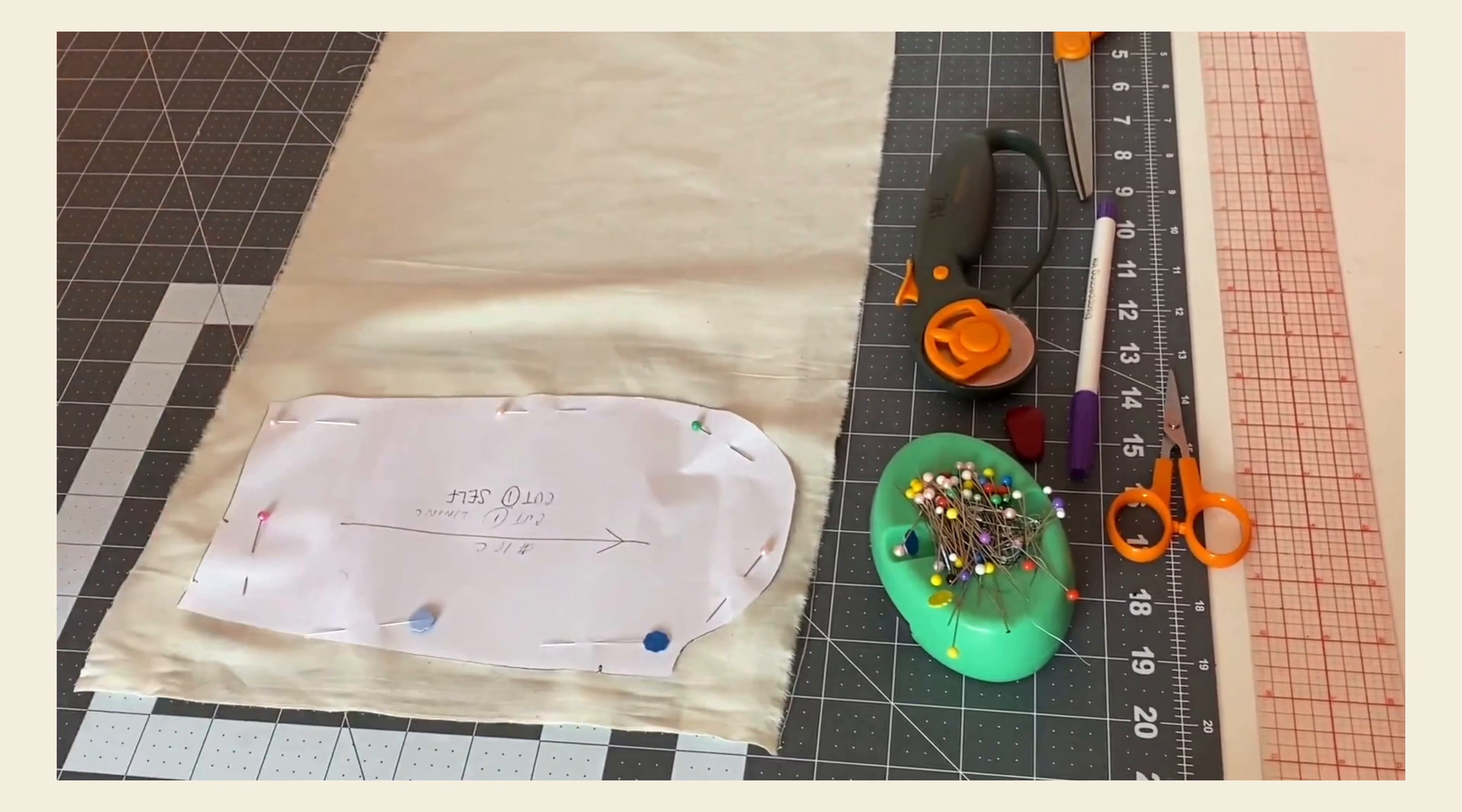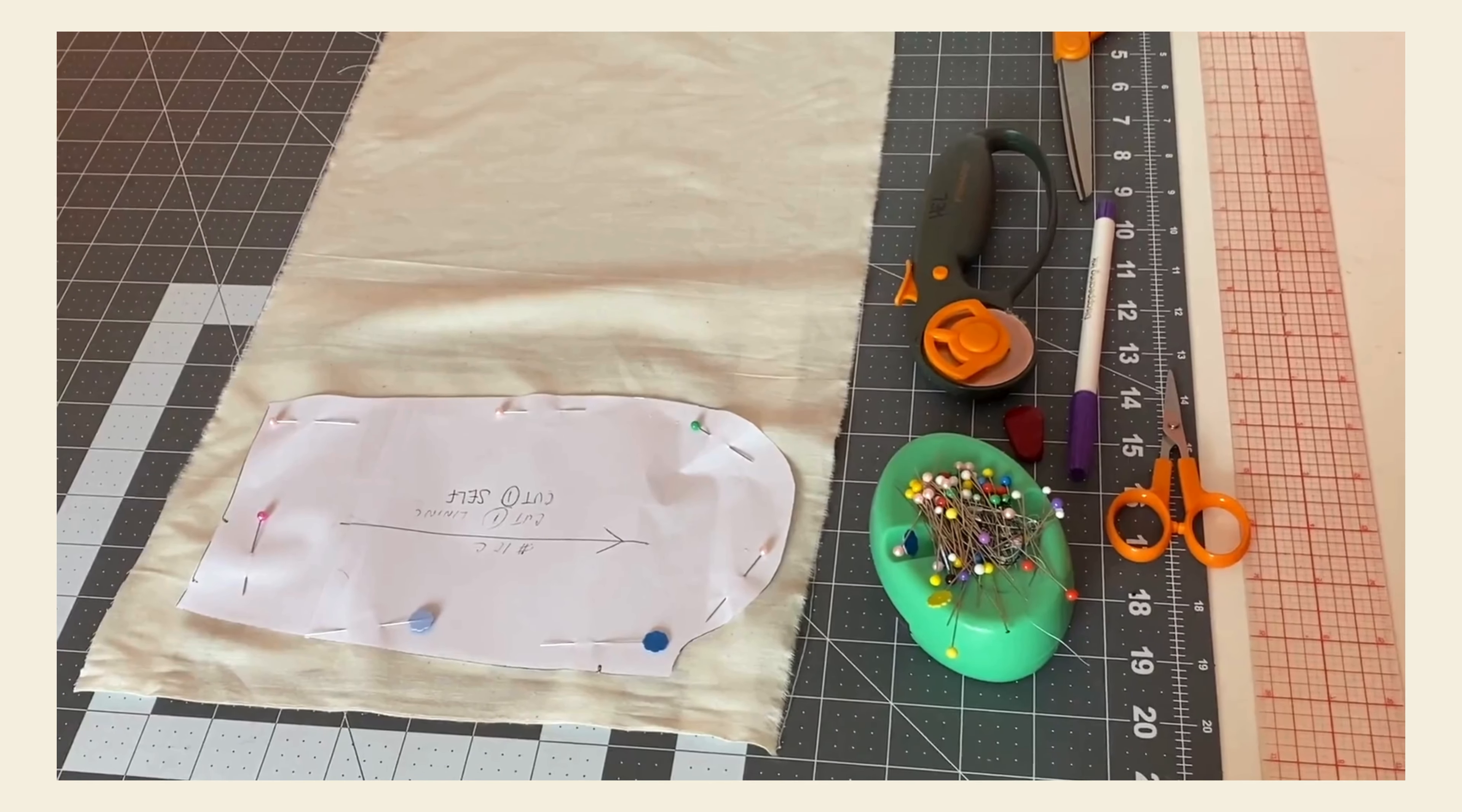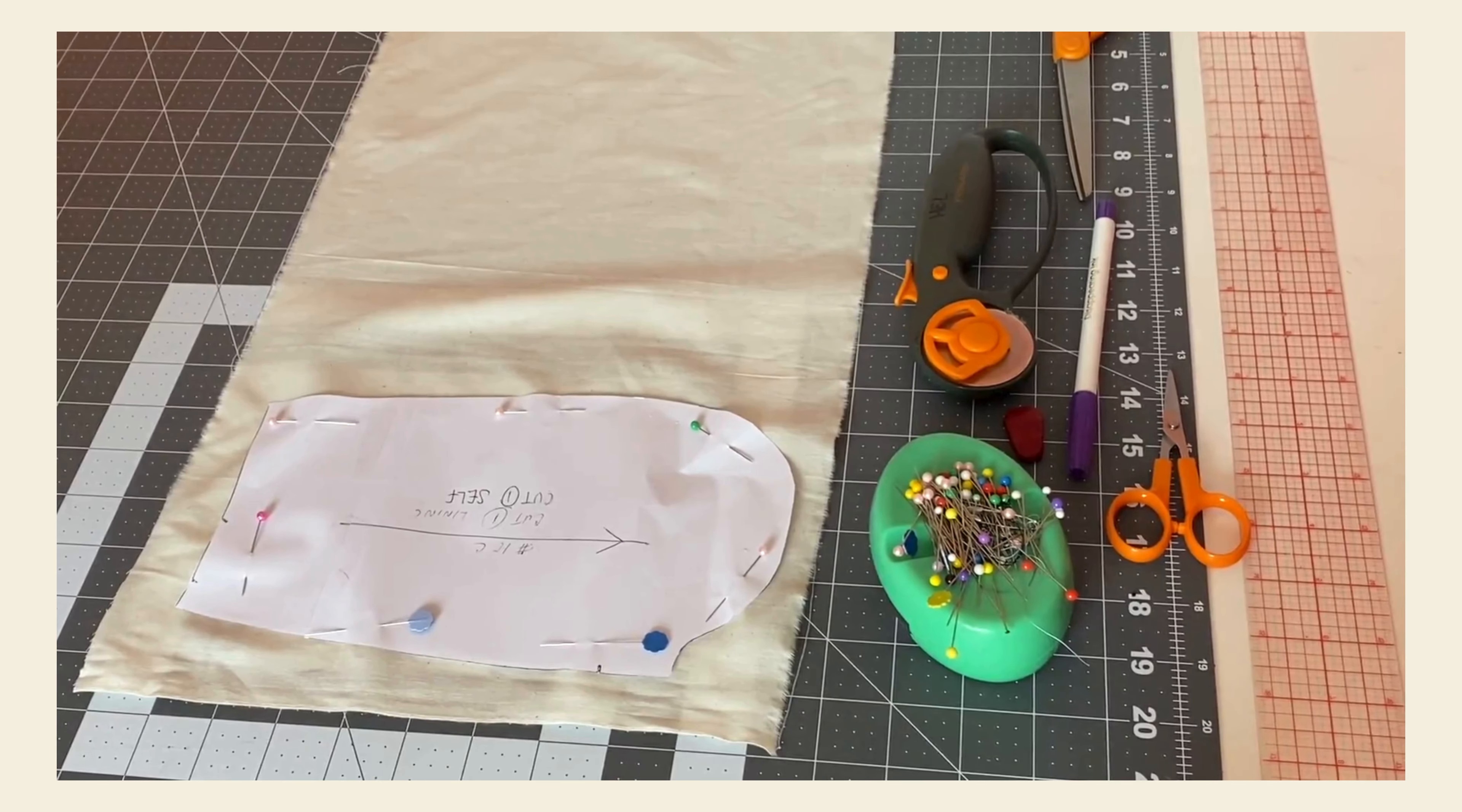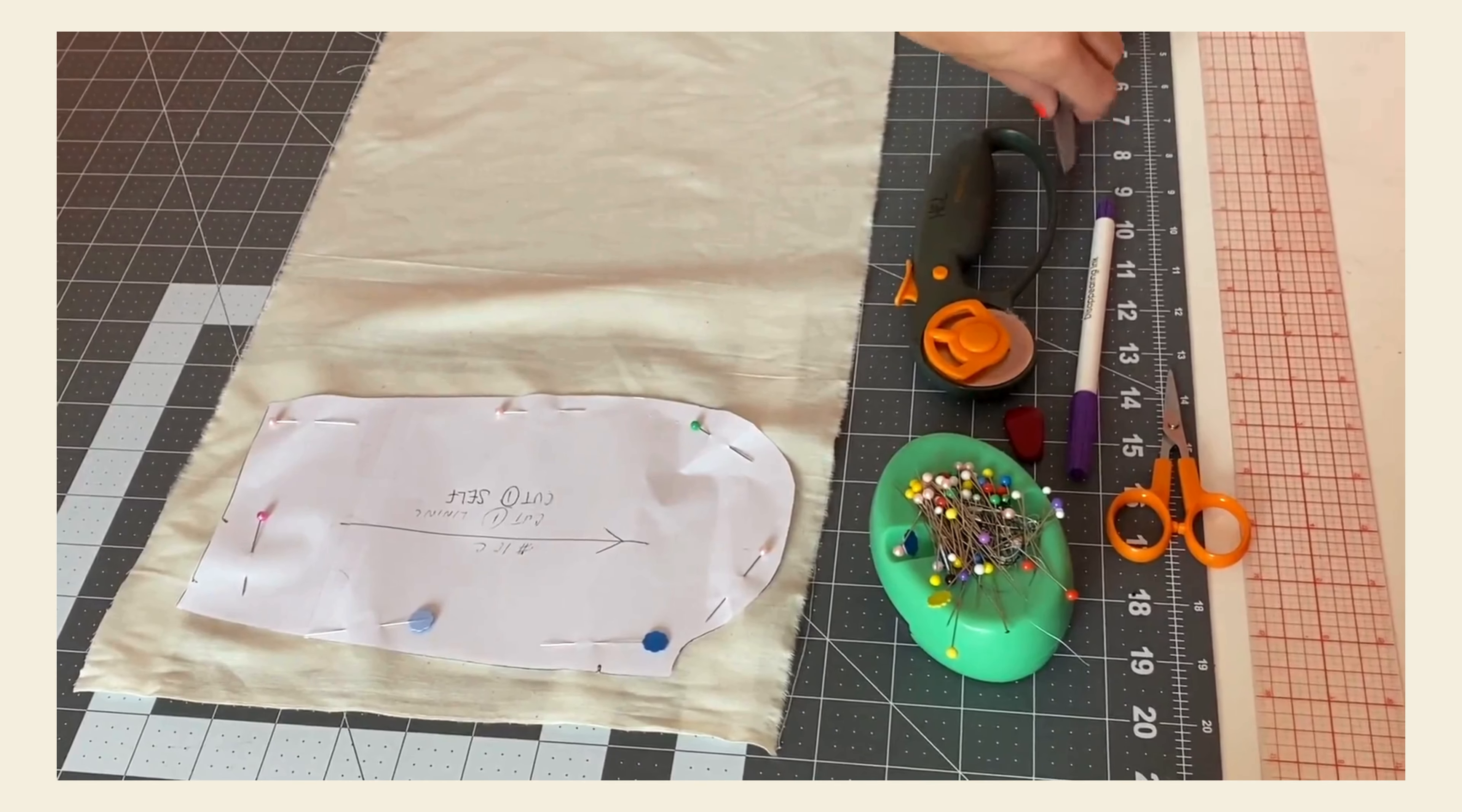Okay. So now that I've pinned my pattern piece to my fabric, making sure that it's laying correctly according to the grain line, which I find by locating the selvedge, it's time to begin to cut it out.